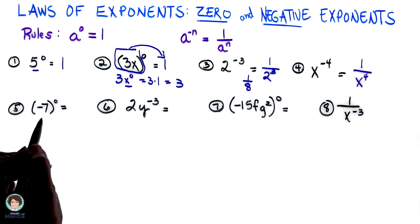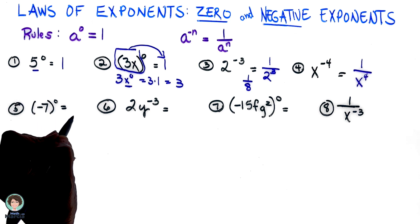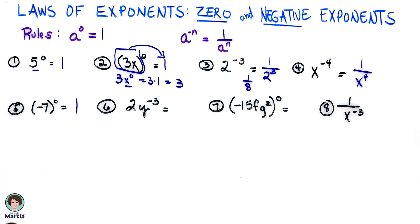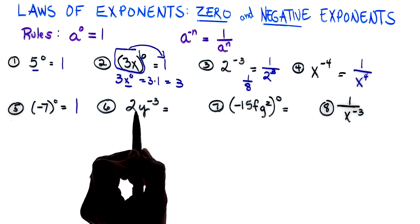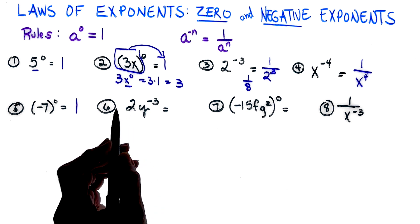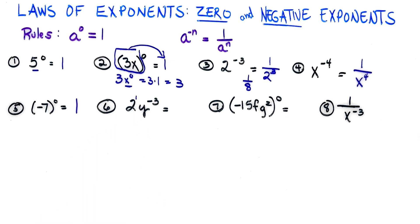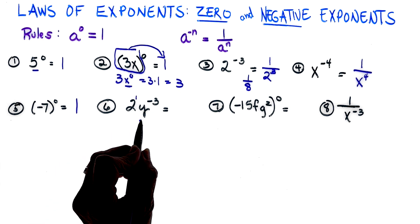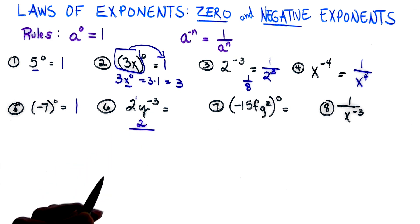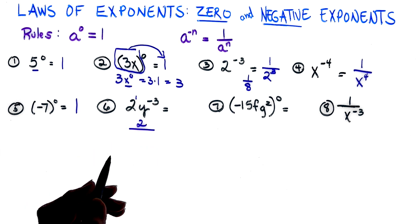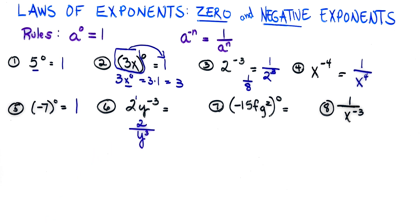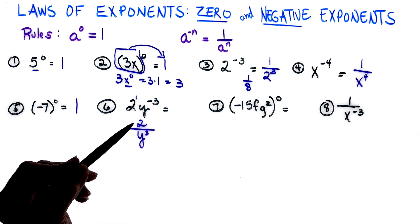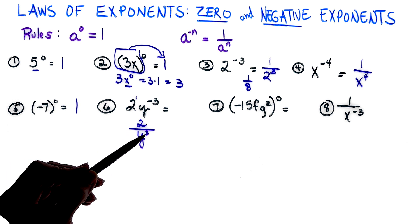See the parentheses—negative seven to the zero power is actually one. Now notice this does not have parentheses at all. My two actually has an exponent of one; it's two to the first power. So my two will be my numerator—it doesn't travel at all. But my y to the negative three needs to go down below. So your answer is two over y cubed.